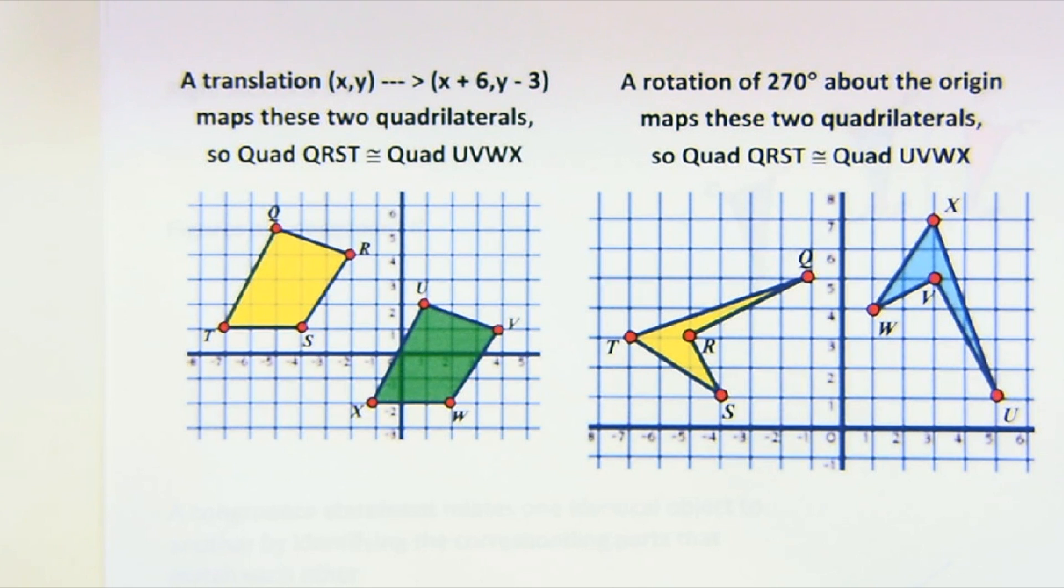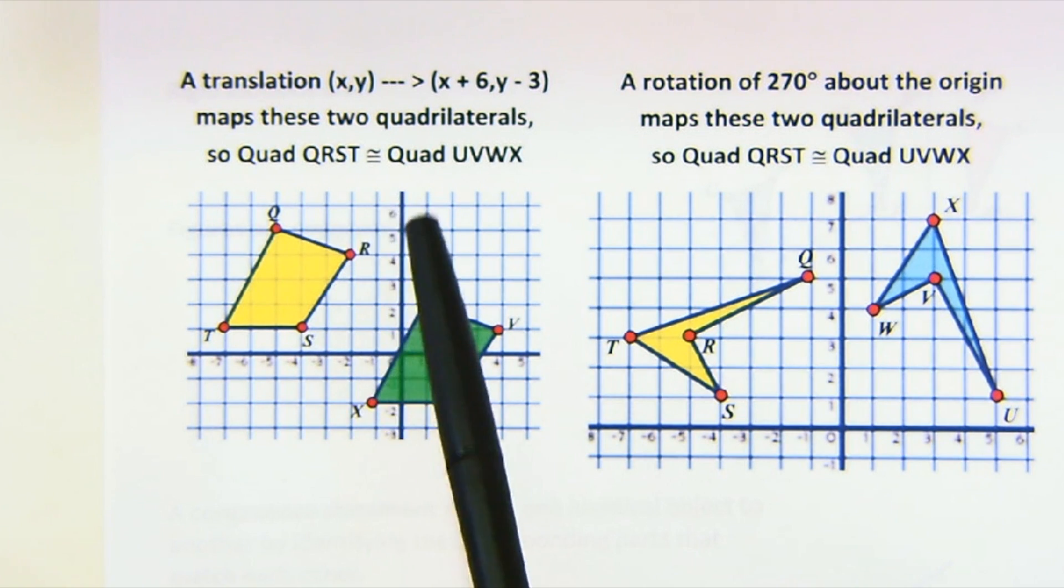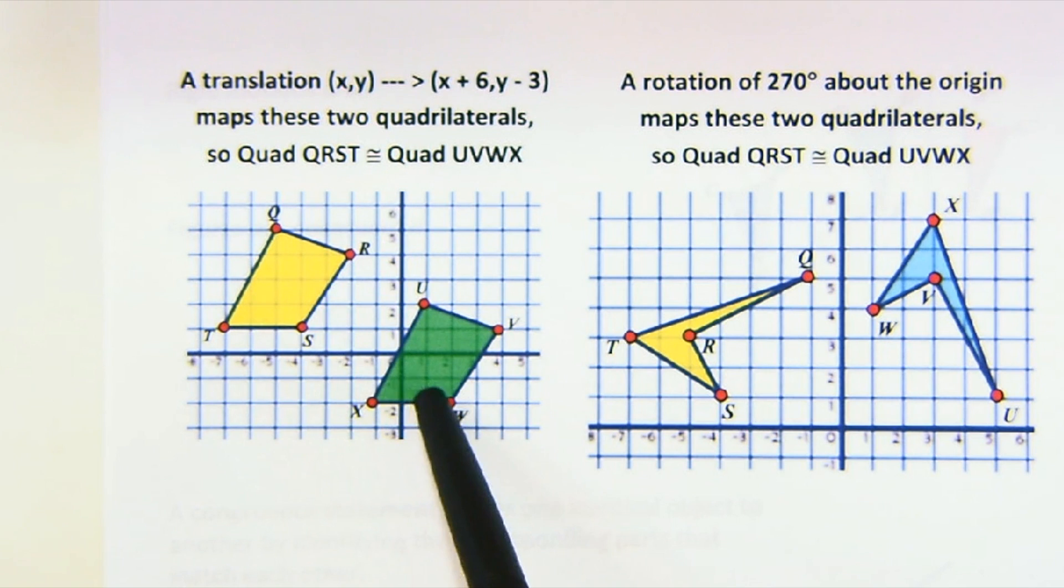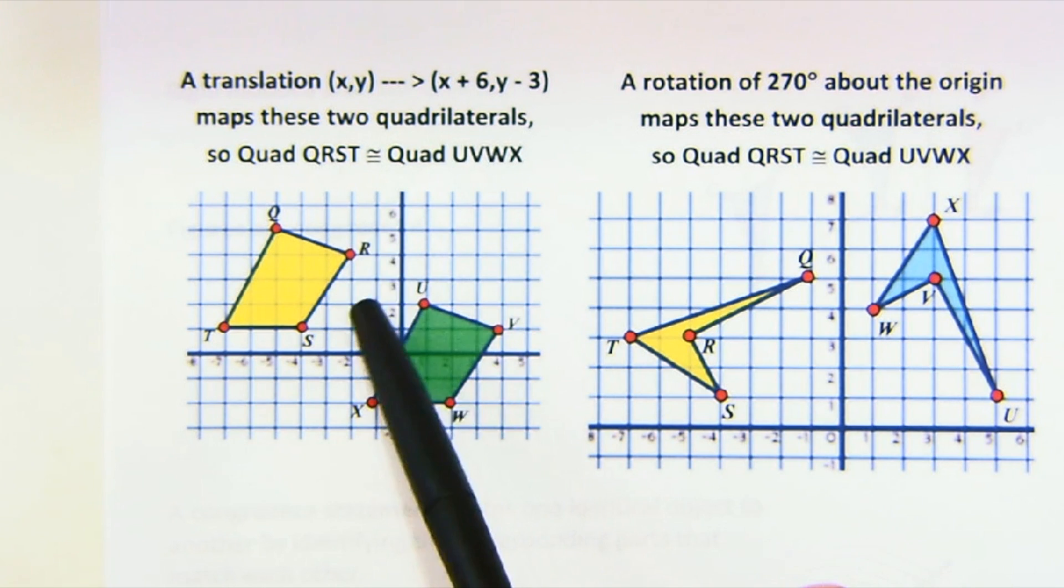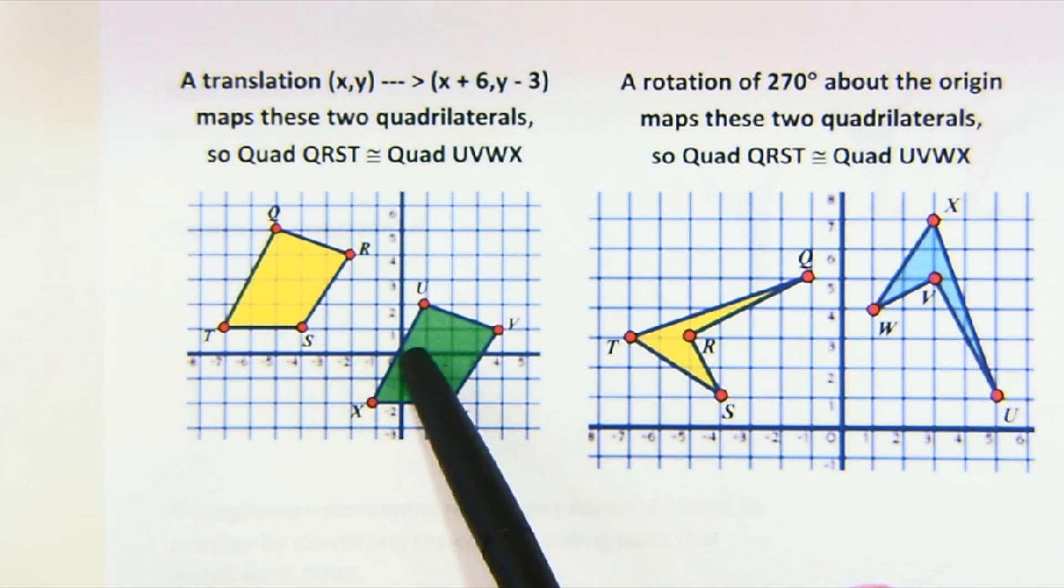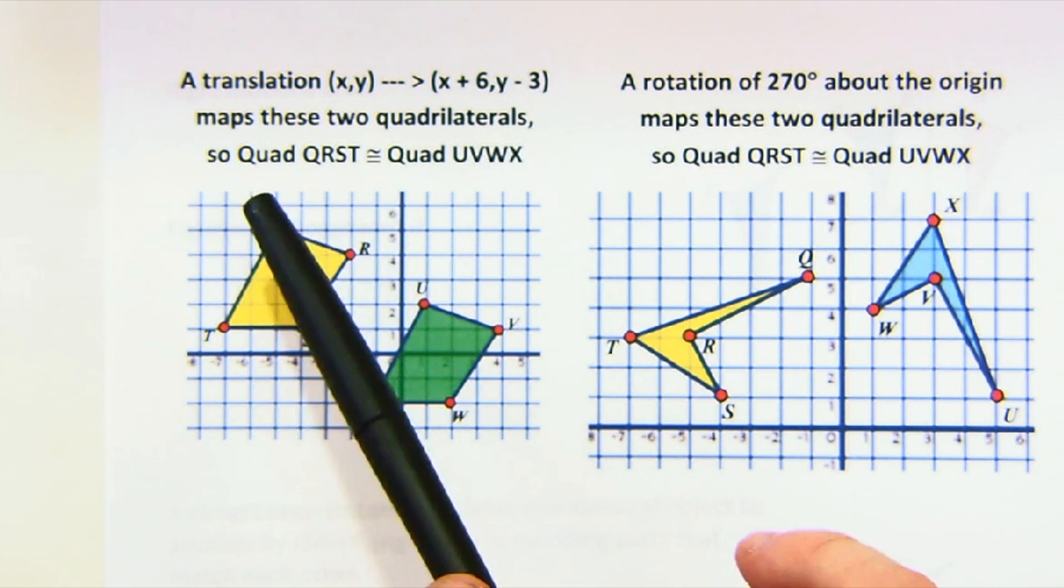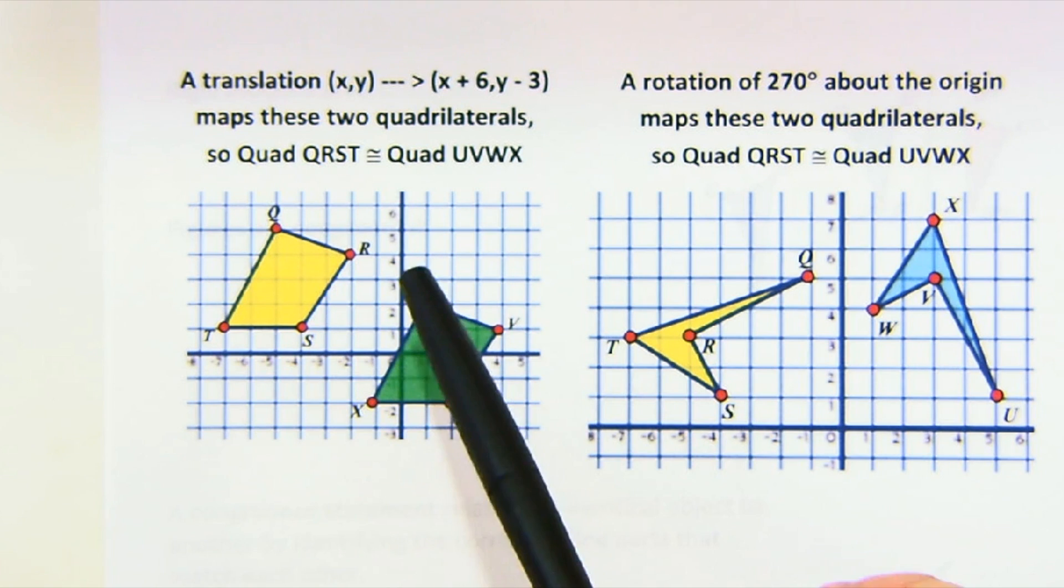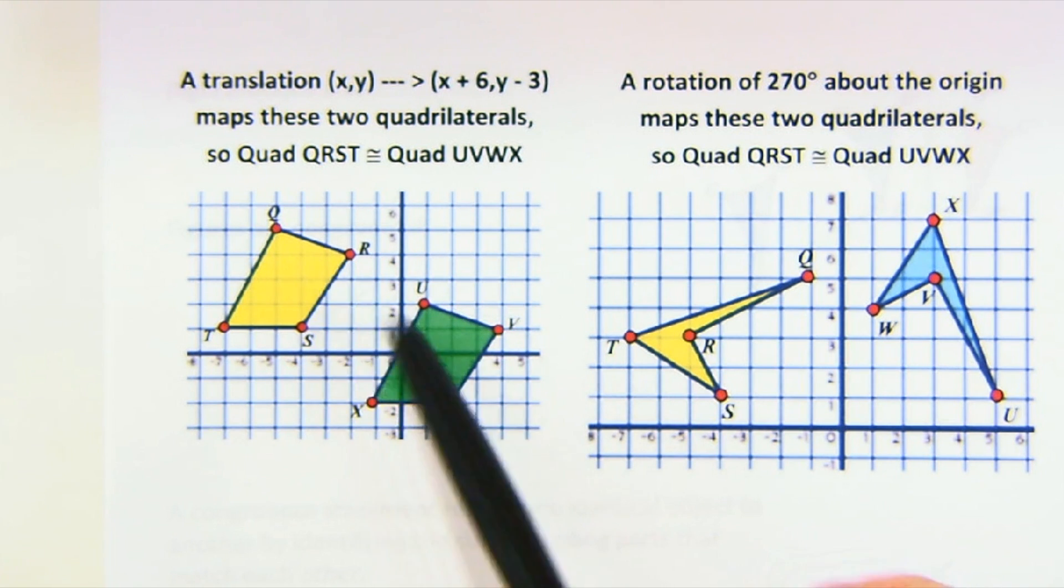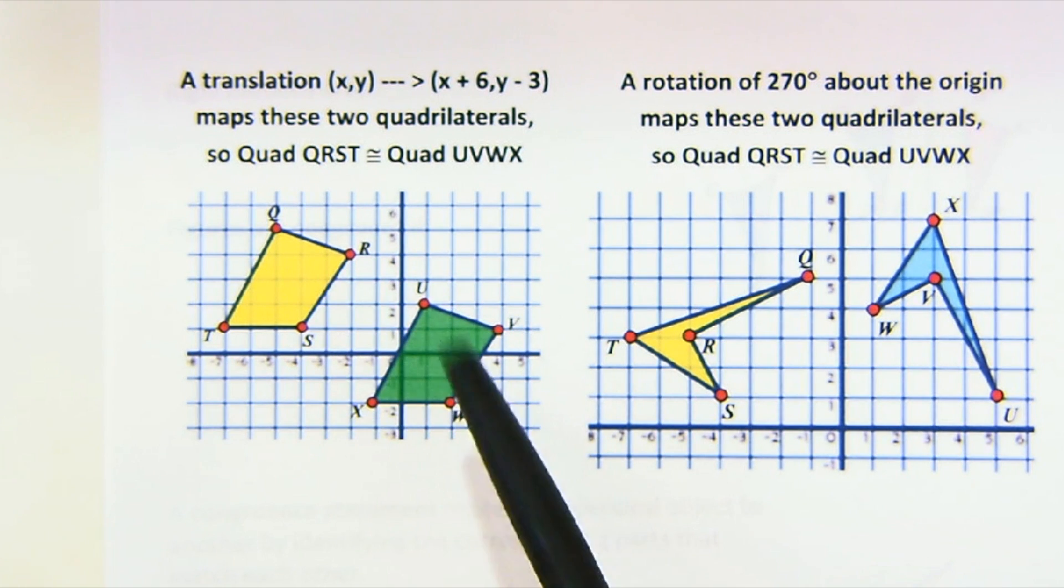So looking up close at this kind of relationship of congruence here, here's an example where I have two shapes, and I could easily establish that these are congruent. Using a nice little transformation of six to the right and three down, that would map QRST onto UVWX. And because of that, these would be congruent shapes.